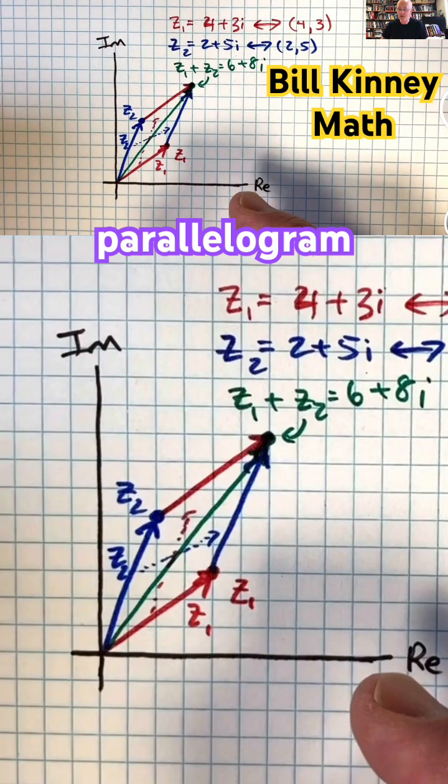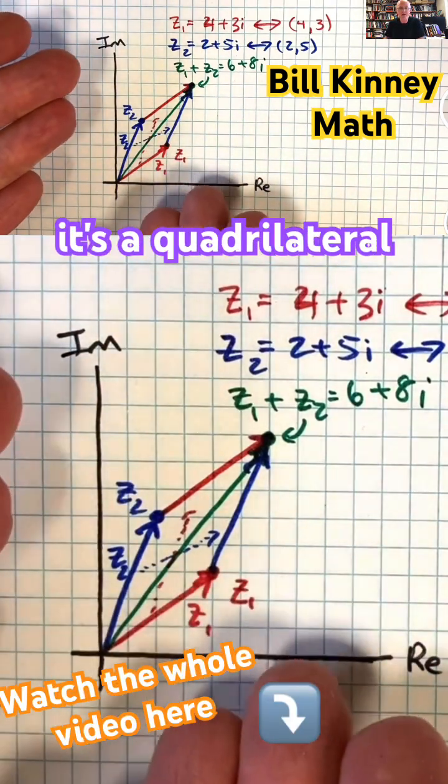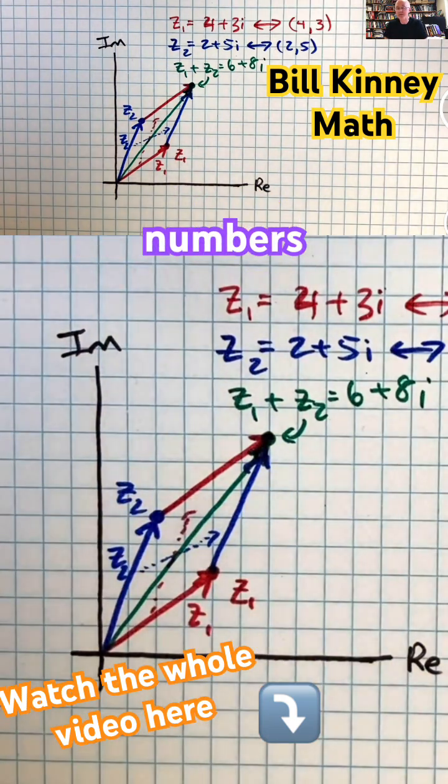It's also illustrating the parallelogram law. This is a parallelogram that you see here. It's a quadrilateral with parallel sides. That's how to add vectors, and in this case, how to add complex numbers. We'll see you next time.